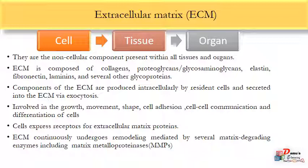The extracellular matrix is composed of different components such as collagen, elastin, proteoglycans, laminins, and other glycoproteins. Each component present in the tissue varies depending on the function of that particular tissue or organ. These components are produced intracellularly by the cell and secreted by active transport mechanisms such as exocytosis. The ECM is involved in growth, movement, shape, cell adhesion, cell-cell communication, and most processes that happen within organs.